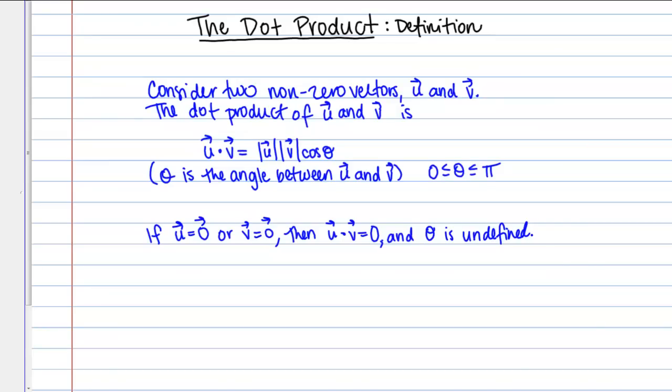Let's go over the definition of the dot product. The dot product is defined as follows. Consider two non-zero vectors, vector u and vector v. Then the dot product of u and v is denoted as vector u dot vector v.